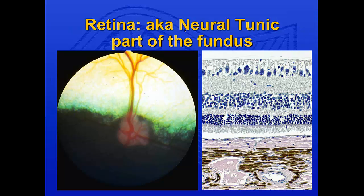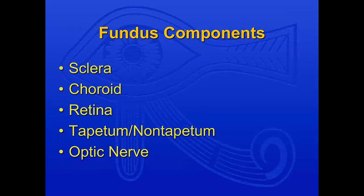On the right is the histopathology of the retina, and you can see the layers — we'll go through them in a second. Below you have what's called the choroid. The components of the fundus are not just the retina; from the outside in you have the sclera, the choroid, the retina, the tapetum and non-tapetum, and finally the optic nerve, which I think of as the plug — the brain tract that makes it all work.